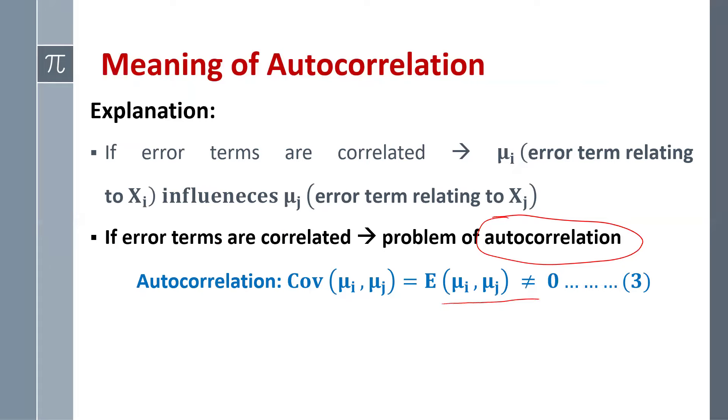So when two error terms in the regression model are correlated, then we have the problem of autocorrelation.